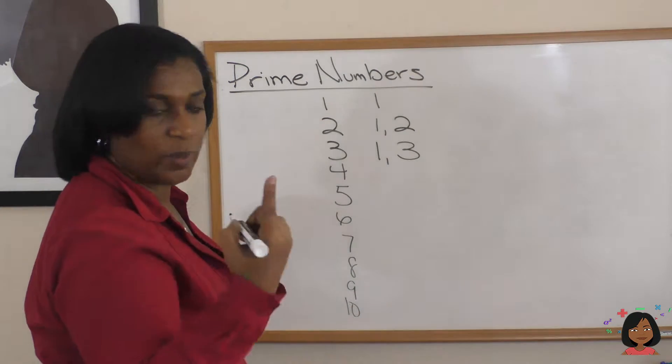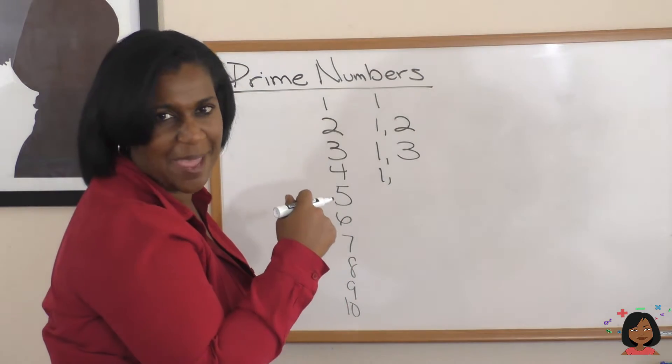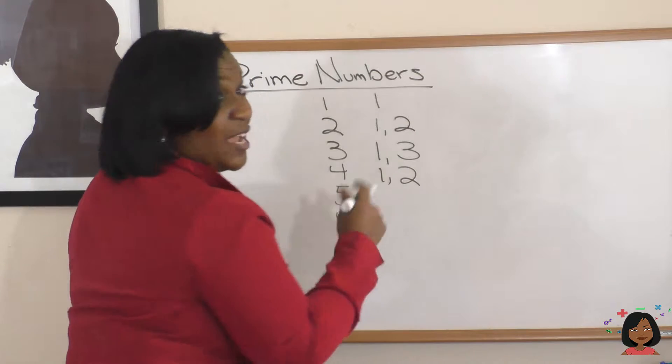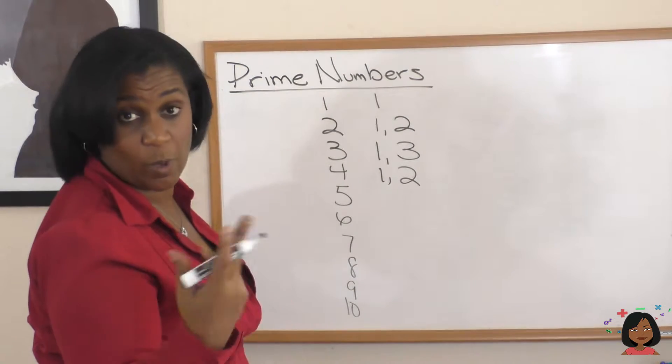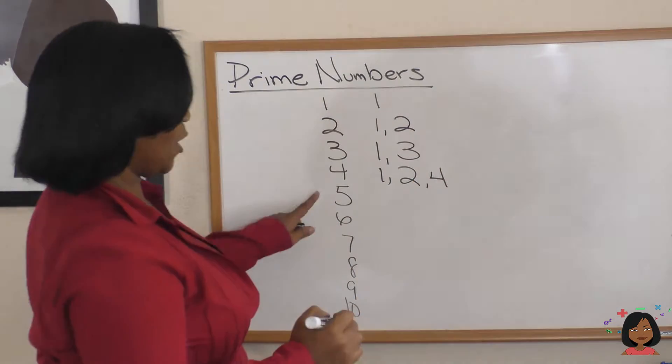When we get to 4, we know 1. 1's a factor of everything if you haven't noticed that yet. But we also have 2, right? Because 2 times 2 equals 4. What about 3? No. What about 4? Yes, because 4 times 1. So let's keep going.